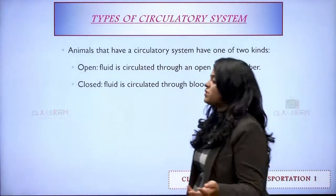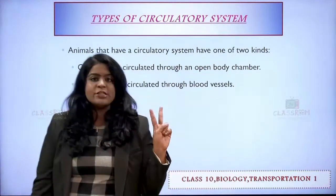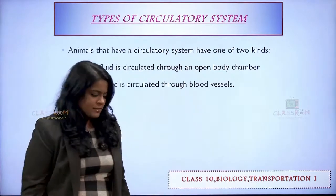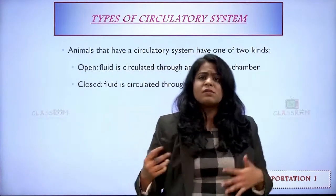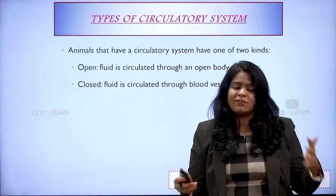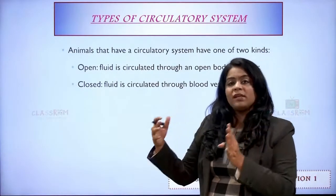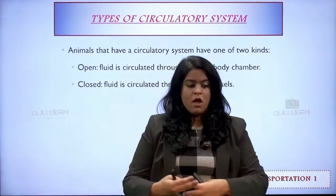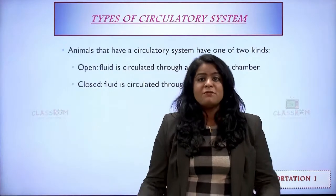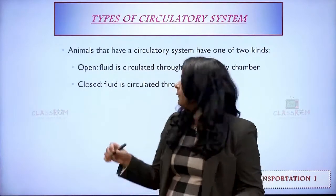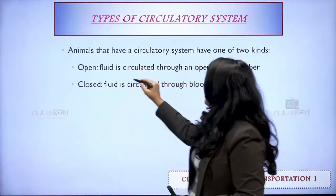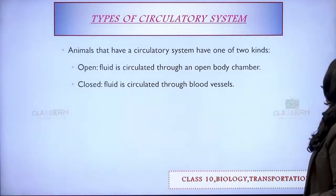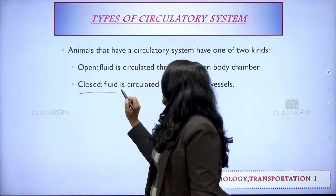Now coming to types of circulatory system — there are actually two types. One is open circulatory system and another is closed circulatory system. We know that for blood to reach all parts of the body we have something called capillaries. In an open type of circulatory system that is missing, and in a closed type of circulatory system the blood is circulated through blood vessels.